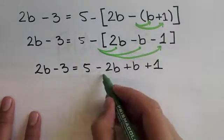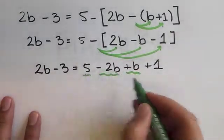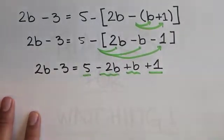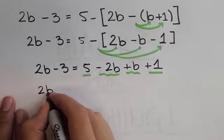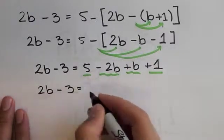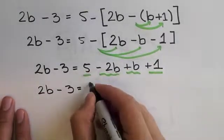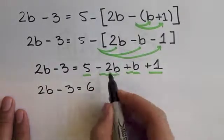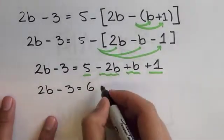Now, as usual, we want to operate similar terms before moving on. So, 2b minus 3 stays the same. Then 5 plus 1 would give you 6, and negative 2b plus b would give you negative b.